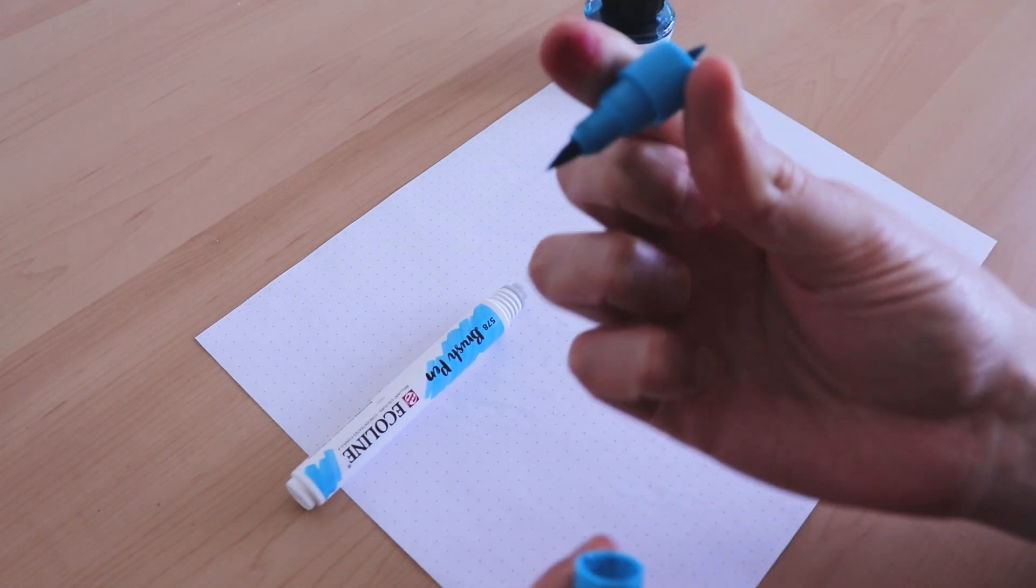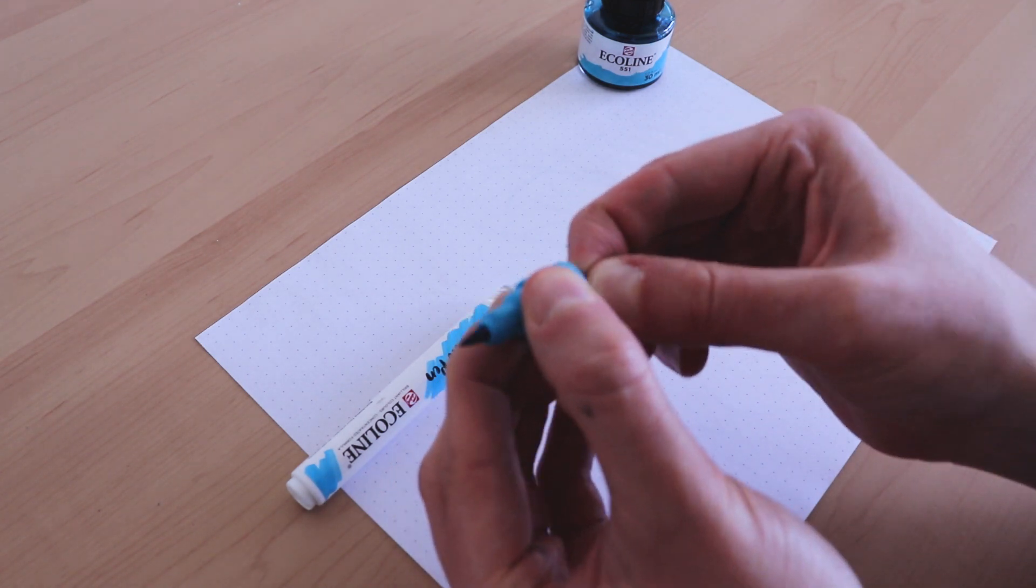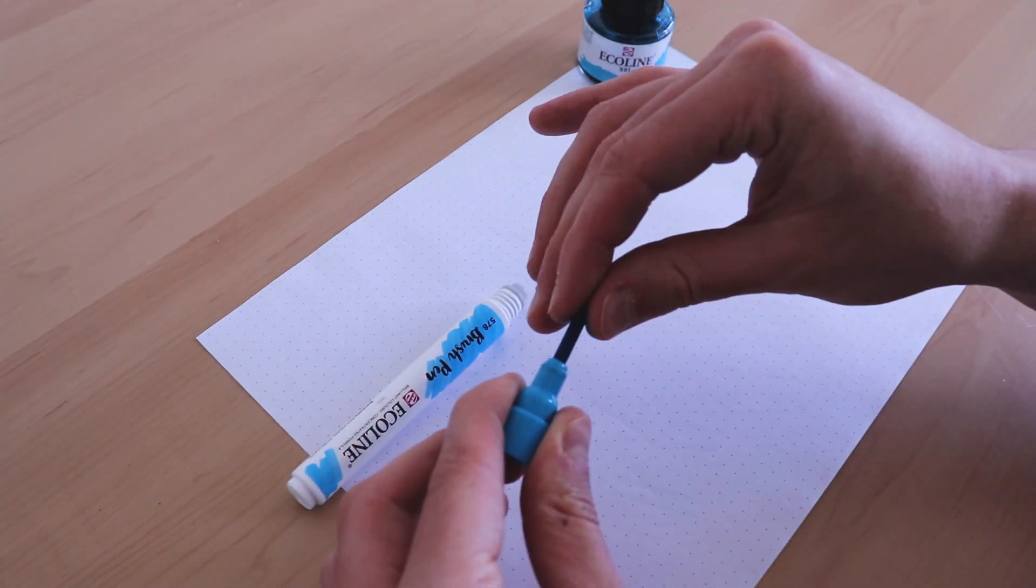To top things off the Ecoline Brush Pen comes with a second tip in case the first one starts to fray. You just screw the top off, flip it and screw it back in.